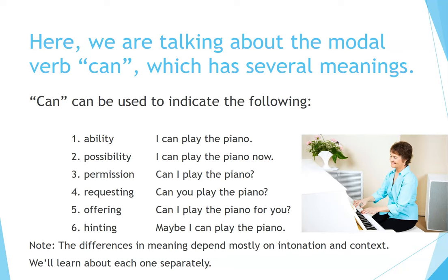Number 1: Ability — I can play the piano. 2: Possibility — I can play the piano now. 3: Permission — Can I play the piano? 4: Requesting — Can you play the piano? 5: Offering — Can I play the piano for you? 6: Hinting — Maybe I can play the piano. Note: the differences in meaning depend mostly on intonation and context. We'll learn about each one separately.